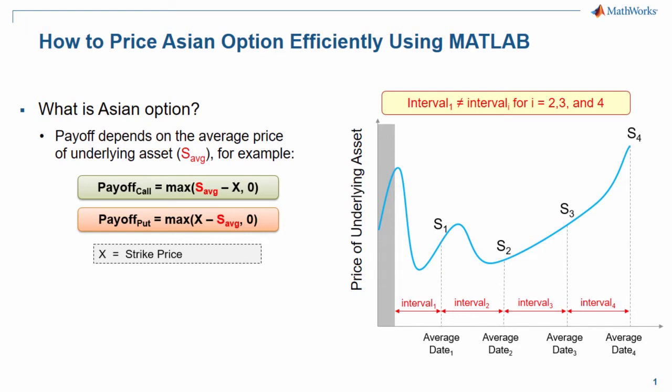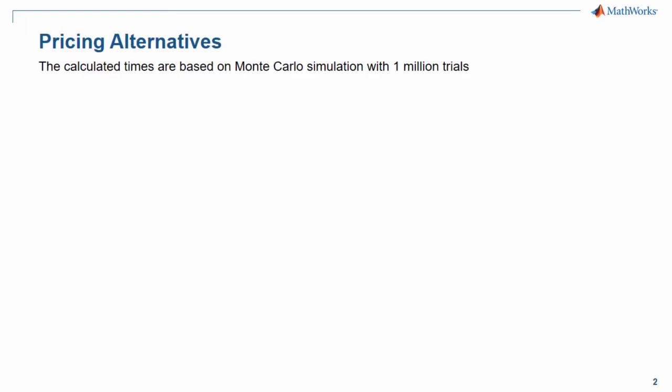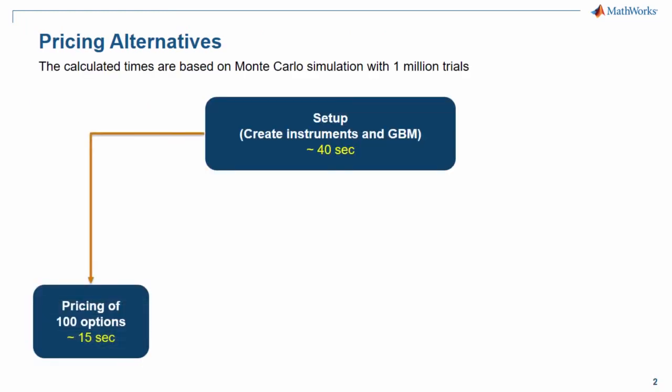Imagine if you have 100 options, it would take you 15 seconds to calculate the option prices and deltas using 1 million trials of Monte Carlo simulation. This is the main disadvantage of Monte Carlo simulation. The larger number of trials, the longer it takes to compute.